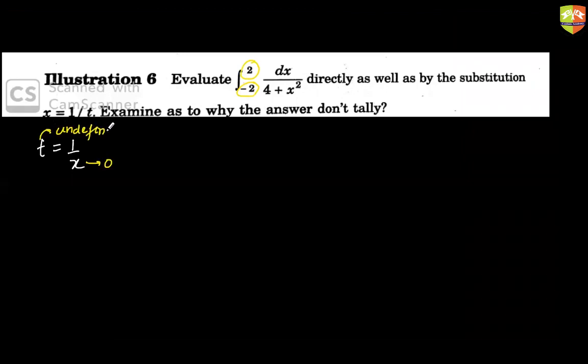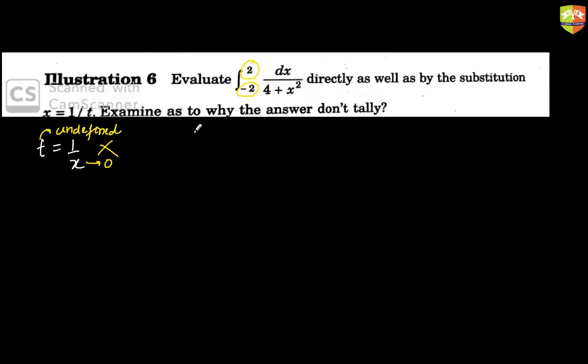Exactly. The answer is there is a point zero somewhere in between. When you say T = 1/x and the limits go from minus two to two, there is a point where x becomes zero — and there, T becomes undefined. That means the function suffers discontinuity at a point between minus two and two if you follow this substitution. So we cannot use this substitution. A very important learning: whenever using a substitution, make sure that nowhere in the interval does the newly substituted variable become discontinuous.